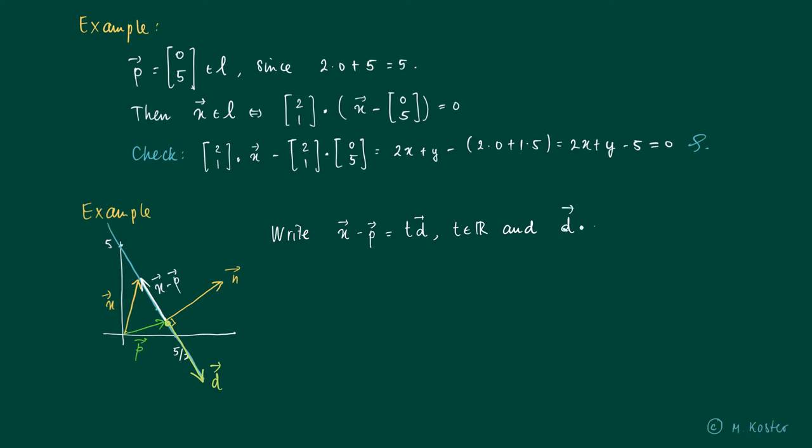And this vector d is just perpendicular to the vector n, the normal of the line. So what we see through this description is that x equals p plus t times the direction vector. This is called the general parametric description of the line.